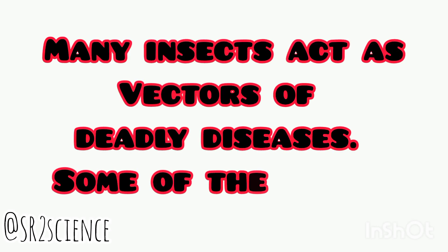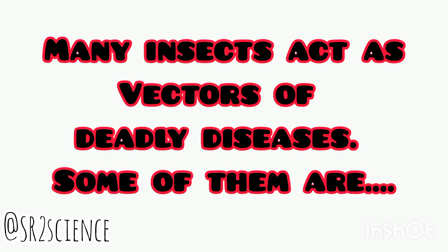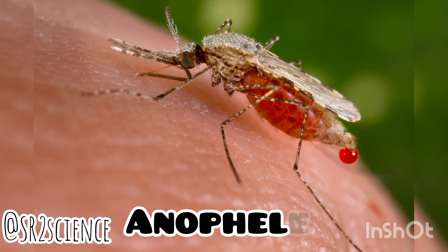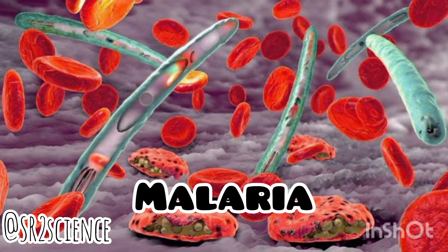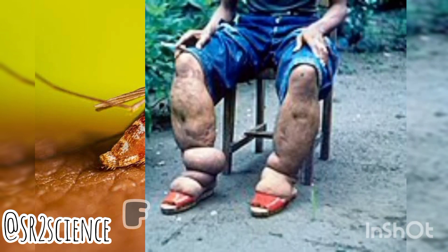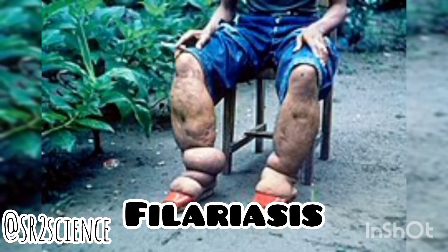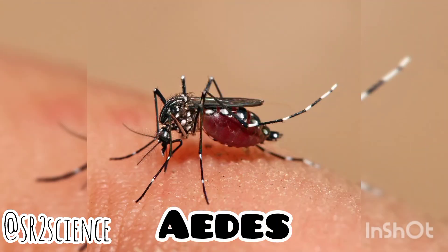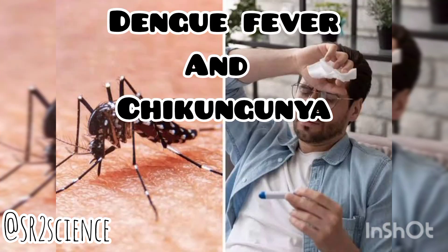Many insects act as vectors of deadly diseases. The Anopheles mosquito is the vector of malaria. The Culex mosquito is the vector of filariasis, which is caused by Wuchereria. The Aedes mosquito spreads dengue fever and chikungunya.